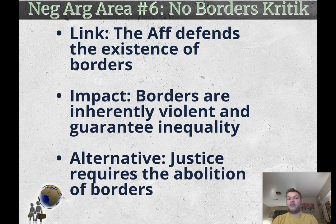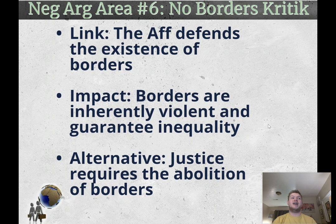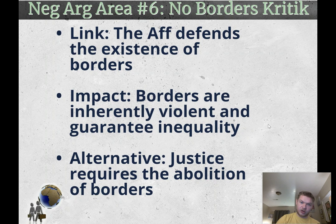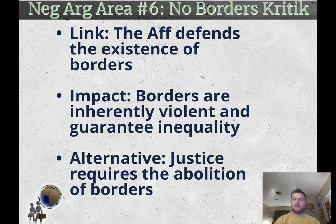Sixth is a critical argument for the negative side: the no-borders critique. If you want to out-left the affirmative, this is the way. The affirmative has to defend the existence of borders — they just have to be open, with very little or no restrictions. They still defend the idea that this territory belongs to this country and these are separate entities. Whereas a no-borders critique says that because the affirmative defends the existence of borders, that is really bad, since borders are inherently violent and guarantee inequality. The alternative: justice requires the abolition of borders rather than merely the opening of them.